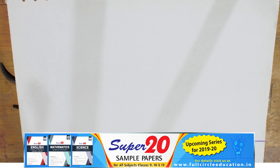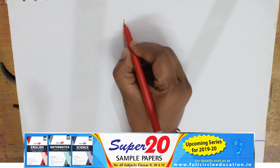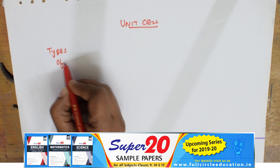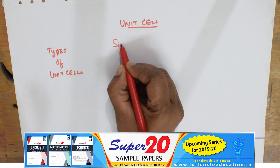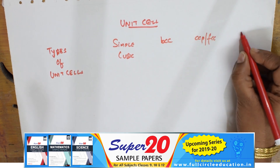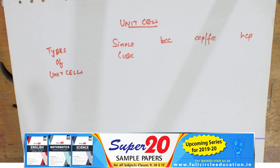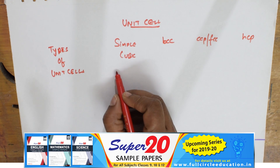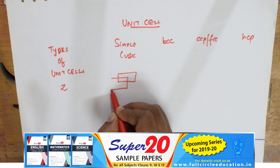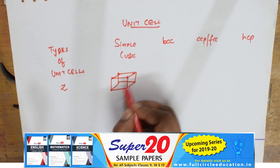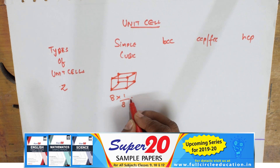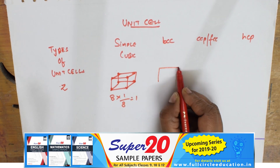Now for the calculation of number of atoms (Z) per unit cell. In simple cubic (SC), atoms are only at the 8 corners, each shared by 8 unit cells: Z = 8 × (1/8) = 1. In BCC, atoms are at 8 corners plus 1 atom at the body center: Z = 8 × (1/8) + 1 = 2.